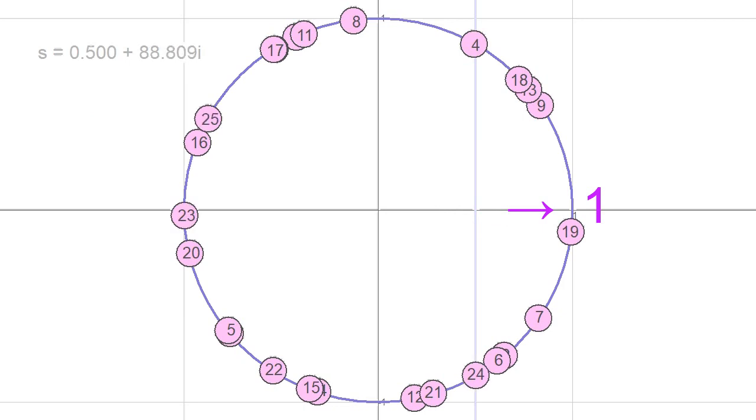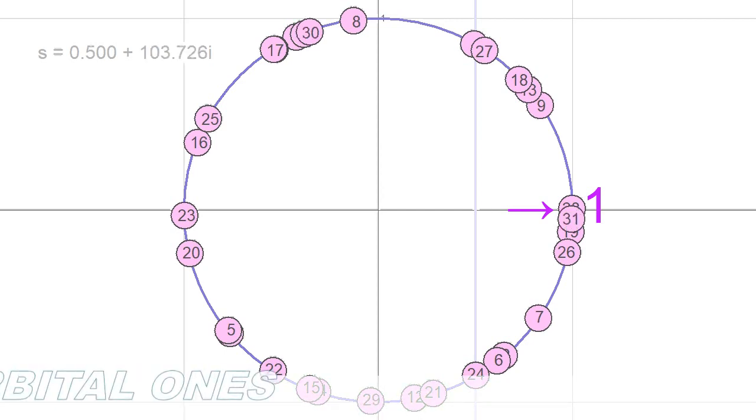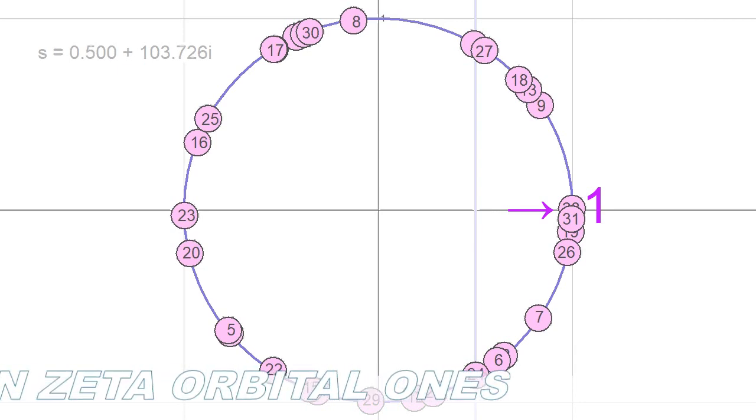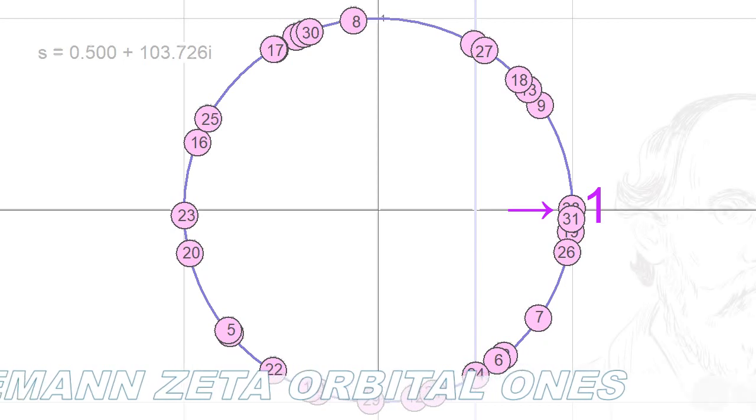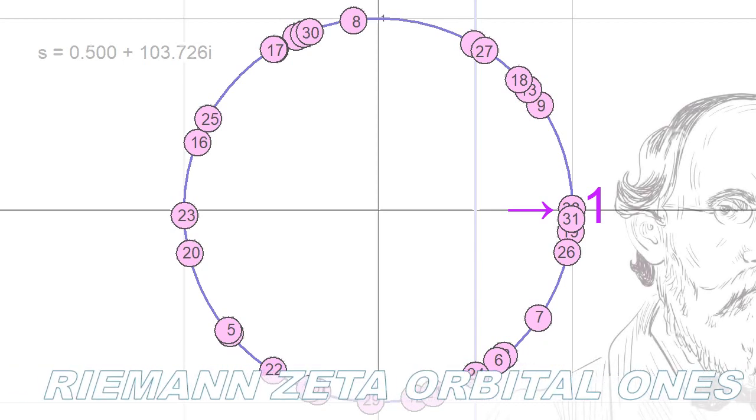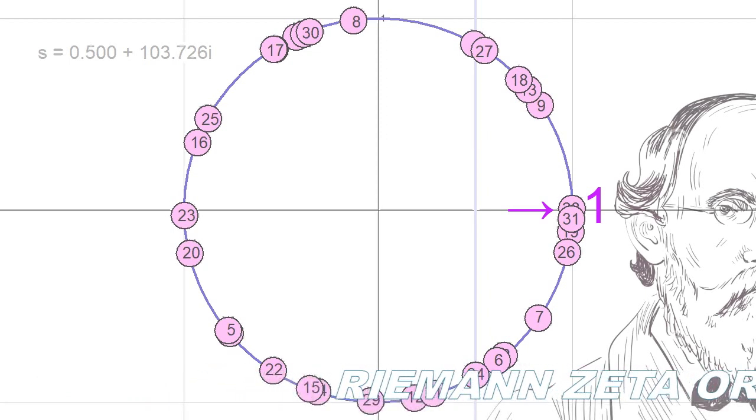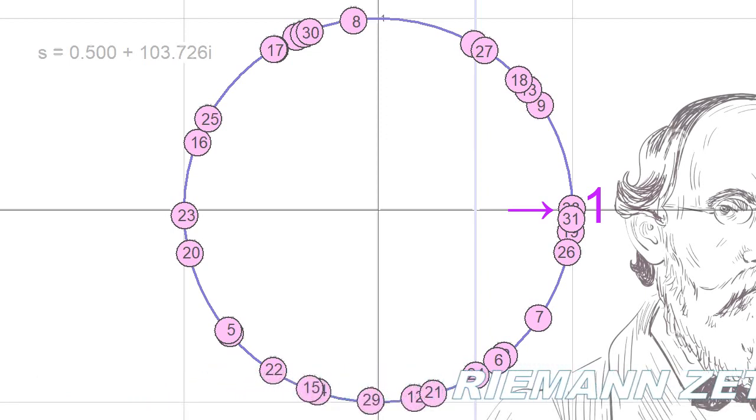While this alone doesn't establish the precise value, algebraic or numerical evaluation confirms that in this case, sigma equals 0.5. It thus appears that the orbital invariance provides an uncomplicated route, beyond the allure of dazzling mathematics, to consistently placing the self-localizations and therefore all the Riemann zeta zeros on the critical line.